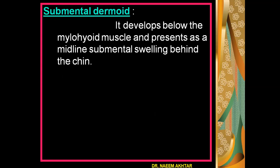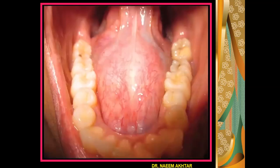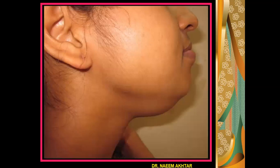In submental dermoid, it develops below the mylohyoid muscle and presents as a midline submental swelling behind the chin in the neck, giving a double chin appearance. This photograph shows sublingual dermoid in the floor of mouth, and this is dermoid seen in the submental region — the patient is having a double chin appearance.